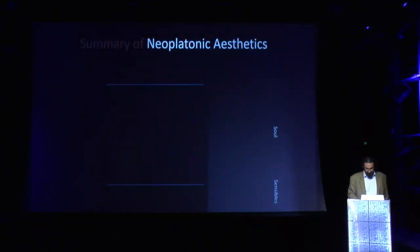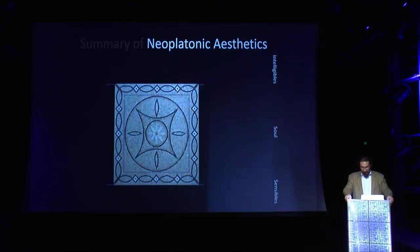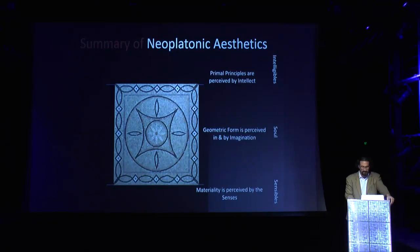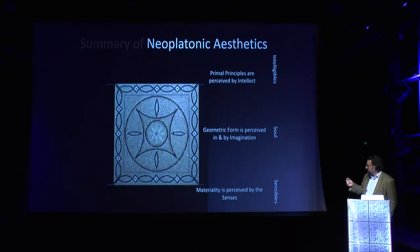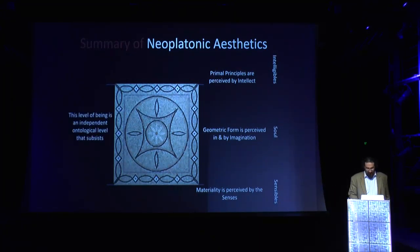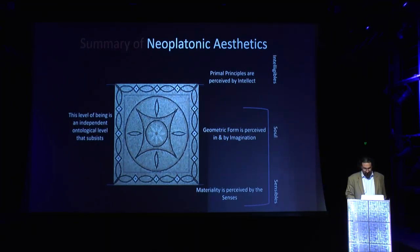We perceive the primary principles through the intellect, and the geometric form is perceived by the imagination. What the artist is essentially doing is bringing before your physical gaze an imaginal object, and through sustained contemplation we ascend to the level of the primal principles. Most of us are able to perceive the first two levels: the material substance, which induces some kind of pleasure, and the geometric form, which also induces imaginal pleasure. But it's through sustained contemplation that we penetrate to the principle itself.